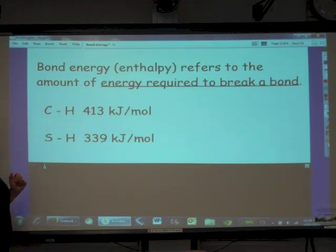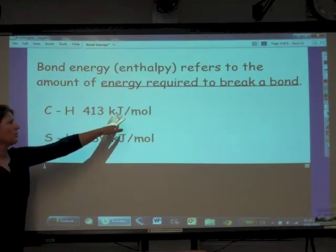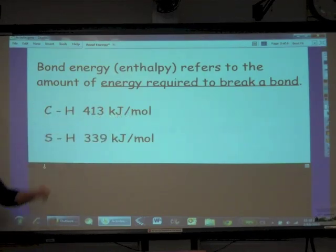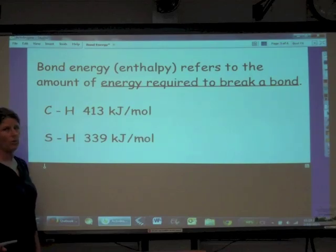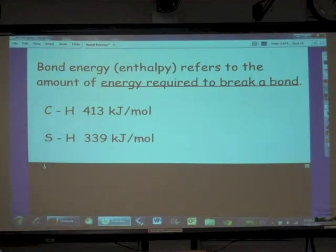So every bond has its own unique bond energy. For instance, a carbon hydrogen bond has a bond energy of 413 kilojoules per every mole of this carbon hydrogen. A sulfur hydrogen bond, on the other hand, has a bond energy of 339 kilojoules per mole. I wonder what kinds of things go into dictating how much bond energy two bonded atoms have.